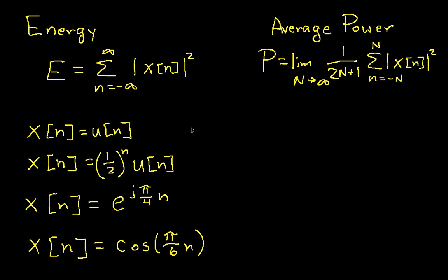To remind you, the energy is the sum of the magnitude squared of the signal over all possible values of n. We use magnitude squared here in case the signal is complex. If the signal is real, then this is the same as the sum of the squared value of the signal.